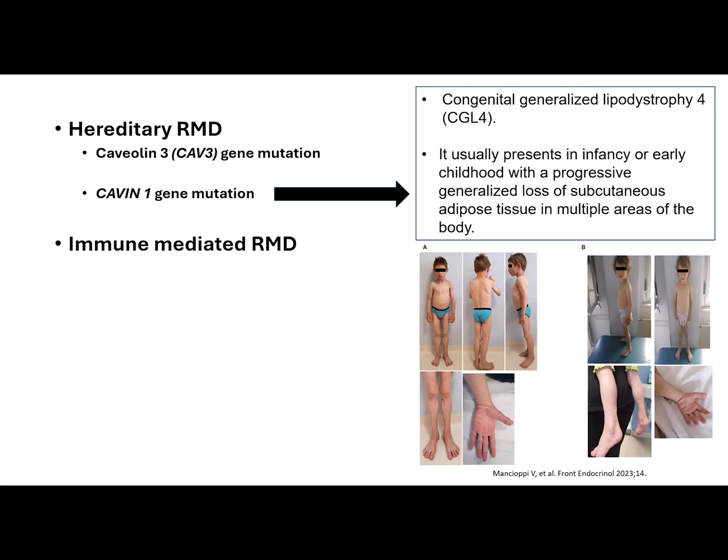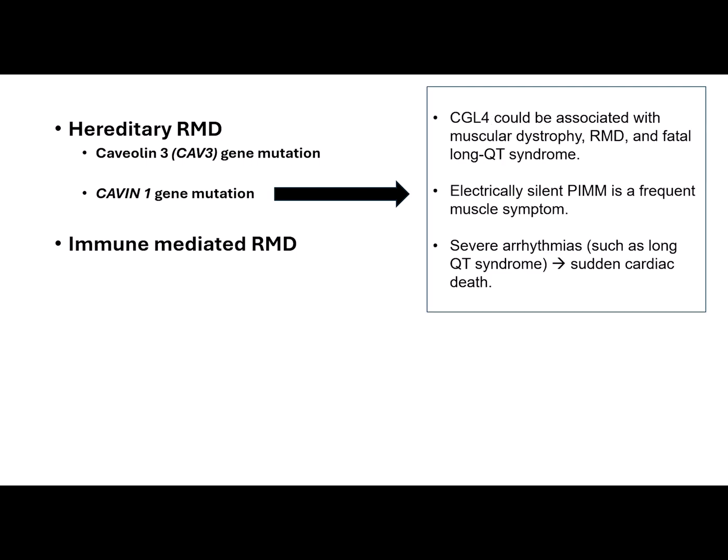Cavin-1 gene mutations result in congenital generalized lipodystrophy type 4, which is the hallmark of the disease and is often accompanied by several extra-skeletal muscle manifestations. It usually presents in infancy or early childhood with a progressive generalized loss of subcutaneous adipose tissue in multiple areas of the body. Congenital generalized lipodystrophy type 4 can be associated with muscular dystrophy, rippling muscle disease, and fatal long QT syndrome. Electrically silent percussion-induced muscle mounding is a frequent muscle symptom occurring in more than 50% of reported cases. Cardiac involvement may be fatal and severe arrhythmias can cause sudden cardiac death.